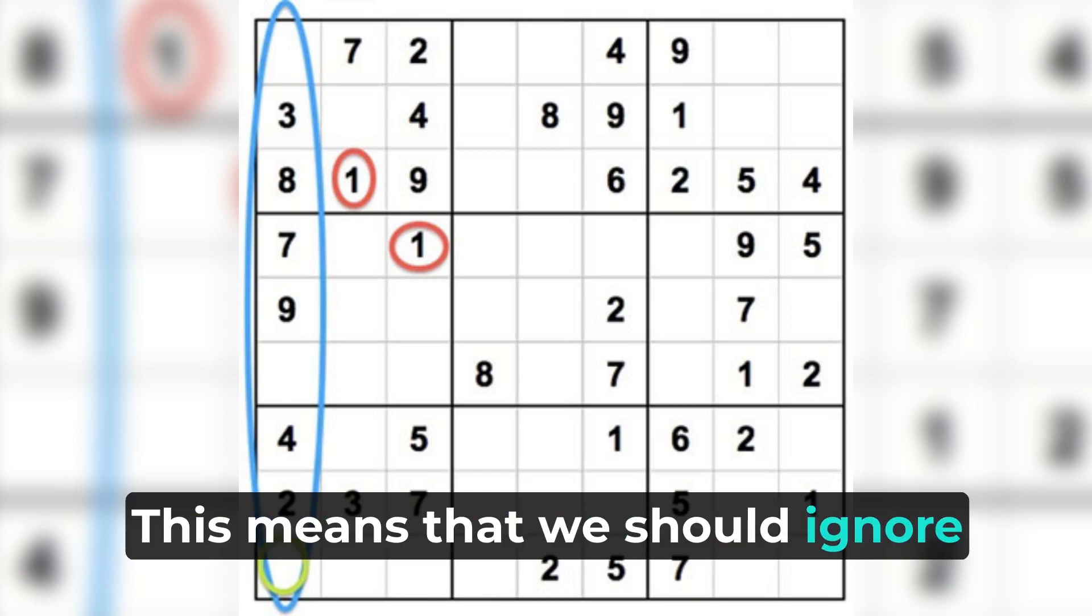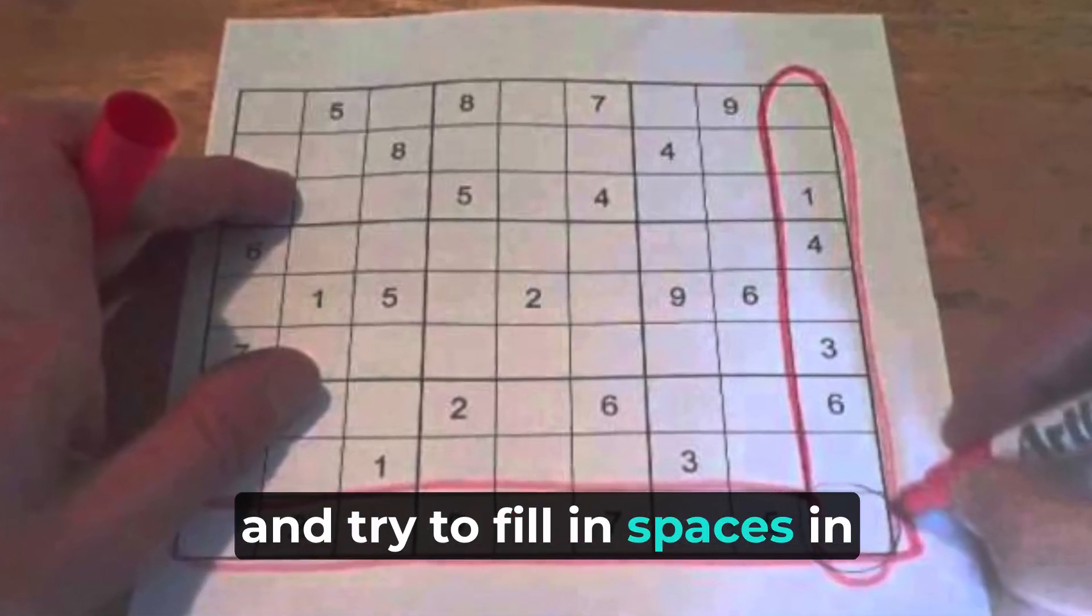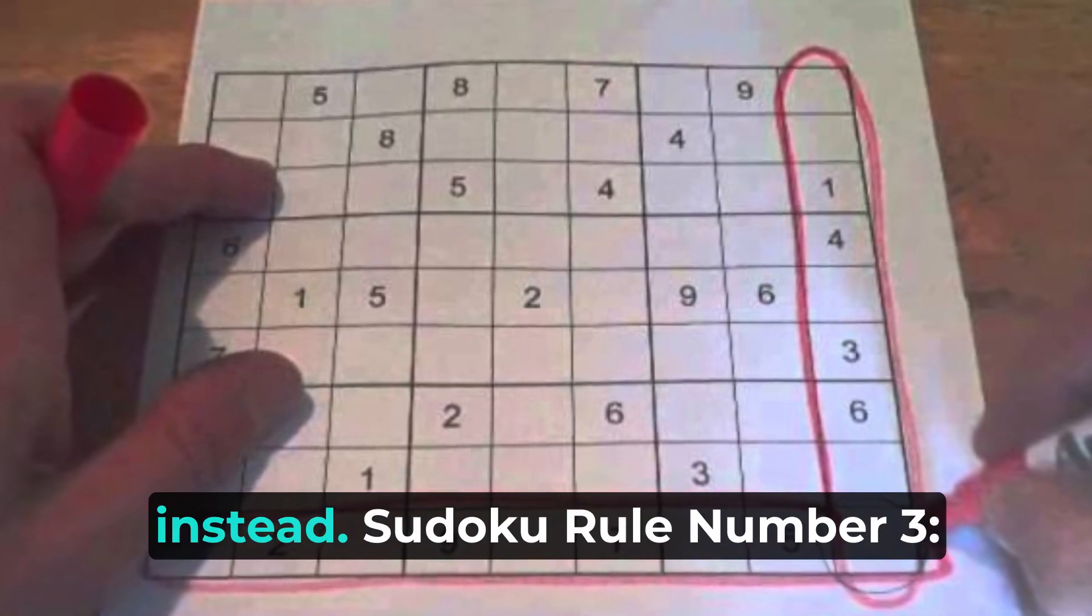This means that we should ignore the upper left square for now, and try to fill in spaces in some other areas of the grid instead.